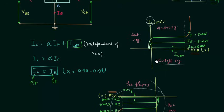And this is how we plot the output characteristics of the common base transistor. If you have any doubts, you may ask in the comment section. See you in the next one. Thank you very much.